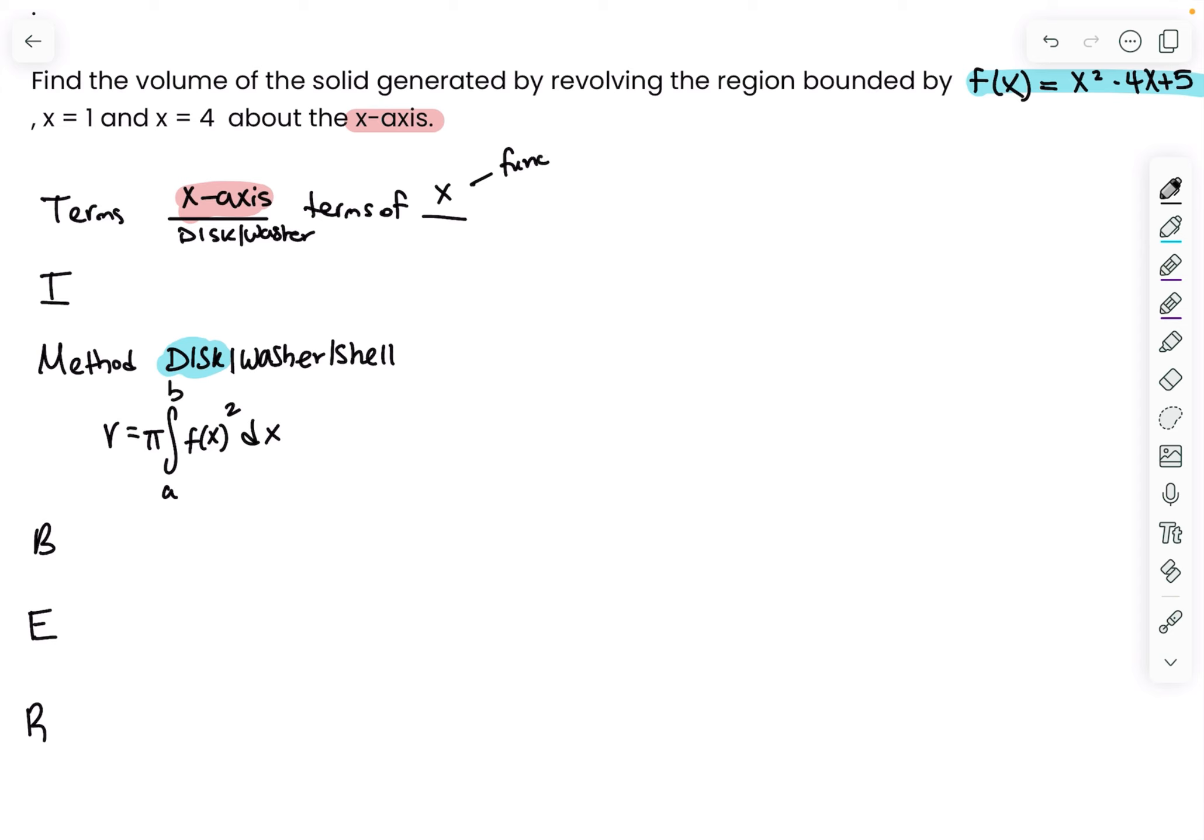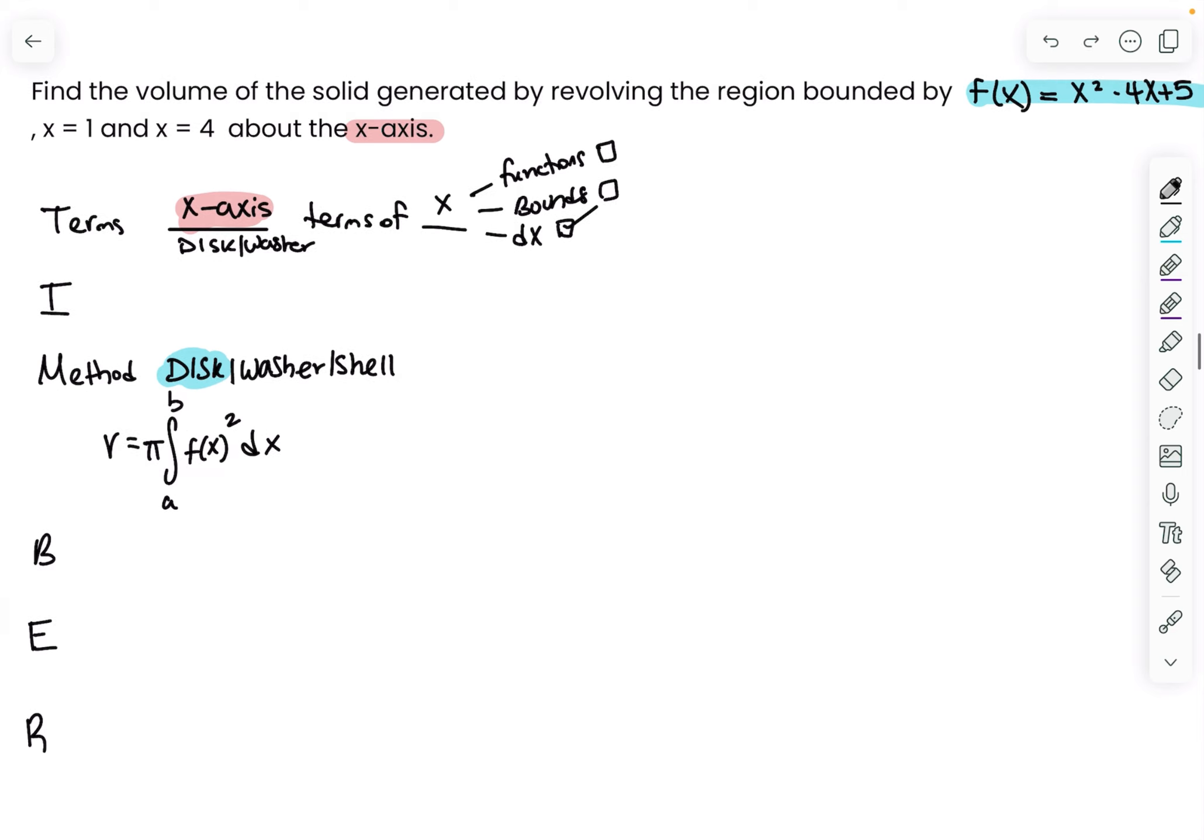That means everything—the function or equations, the bounds or intervals, and the integral—has to be in terms of x. I already have dx, that's good. I have this f(x), it's in terms of x. And it already is in terms of x because literally the variables are x. So we're good.